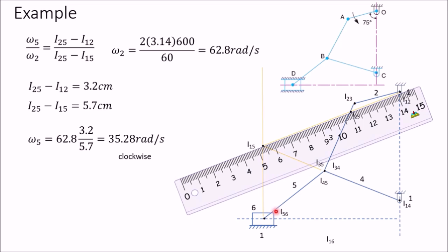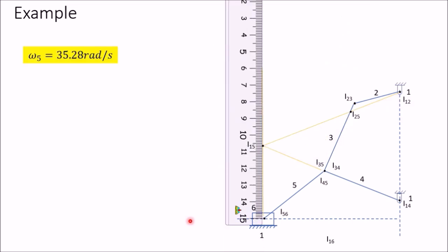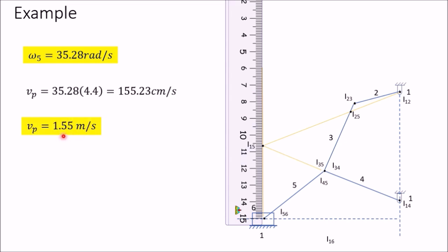Once we have the angular velocity of link 5, we can determine the velocity of slider D using V = R × ω, where R is the distance of point D from the center of rotation I₁₅. This distance measures approximately 4.4 cm. So velocity of the slider = 35.28 × 4.4 = 155.23 cm/s, which converts to 1.55 meters per second.